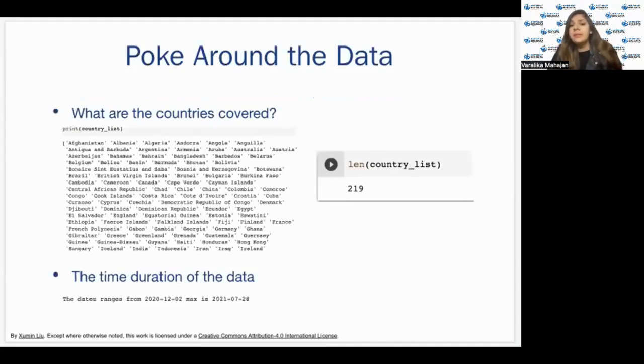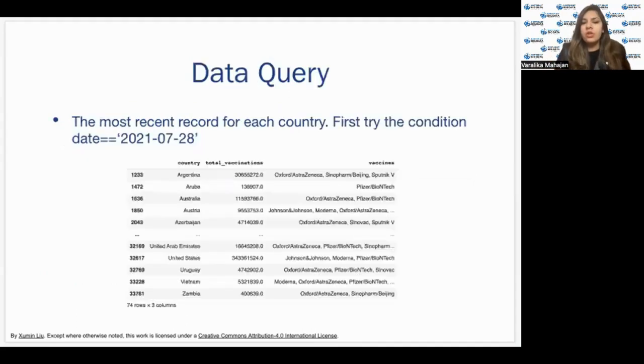Then the third step is to poke around with data, just getting to know your data a little. For example, see what all countries does it include, how many countries does it include, which is 219, and what is the duration of data? What is the time range for which we have the entire dataset? And it can be many other things, like the name of vaccine, the vaccine categorization, or maybe we can say dosage one or dosage two, this category, how many values of each one we have, and so on.